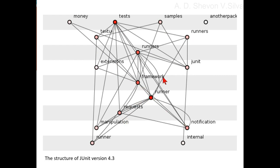Here, runner interacts with runners and tests. Notification interacts with runners, tests, and requests. Runners interacts with requests and tests. Internal interacts with JUnit.